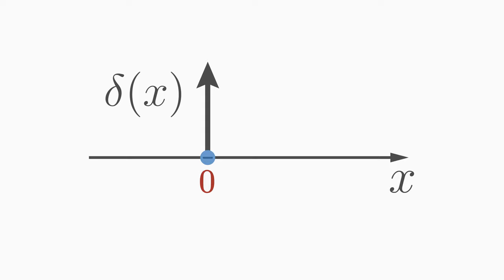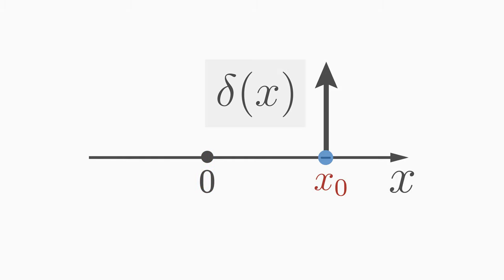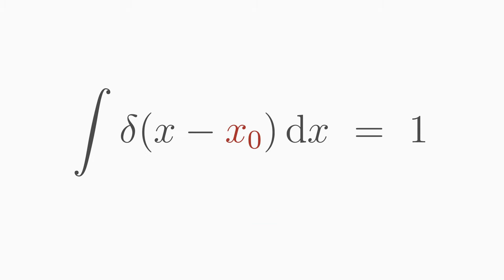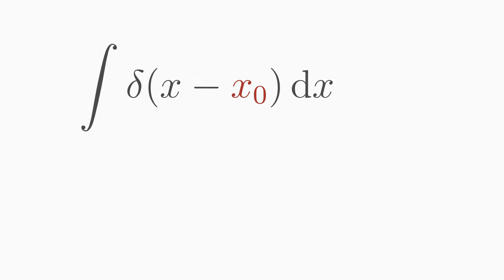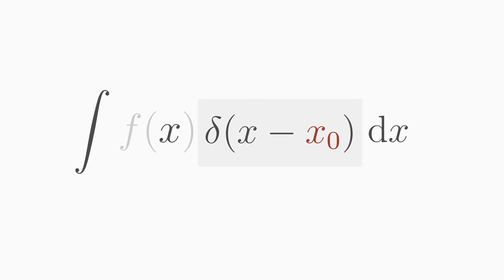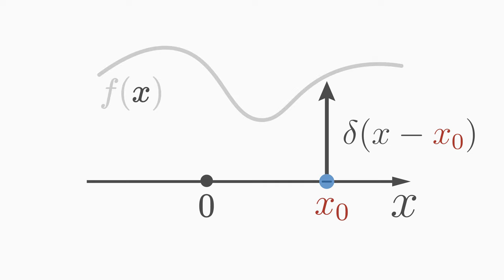We can, of course, move the charge to another location on the x-axis, for example to the positive location x equals x₀. Then the delta function must be zero everywhere except at this new position. We change the argument of delta to x minus x₀ — minus x₀ because we have moved the delta function in the positive direction. The integral over this shifted delta function is still one. When the shifted delta function appears in the integral with another function f, the delta picks the function value of f at the position where the delta function is currently located.